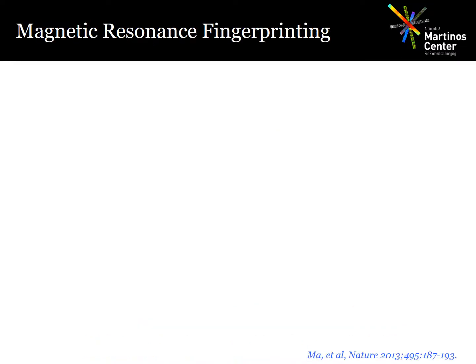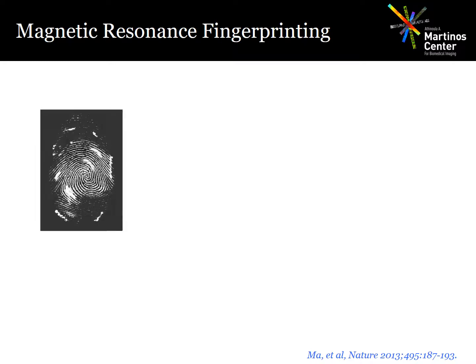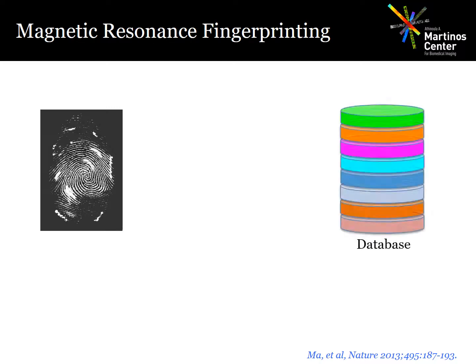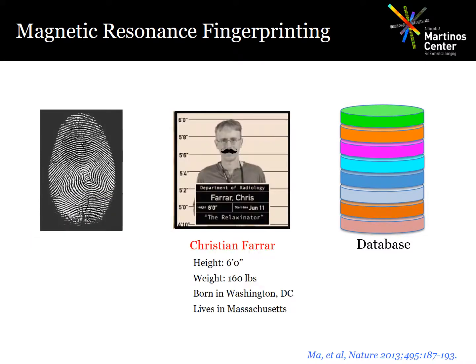MR fingerprinting is a recently developed technique that can theoretically provide the quantitative tissue maps that we want. Just to explain the concept, let's use an analogy. In a crime scene, a fingerprint can provide information on the subject if it matches an entry in a previously compiled database. For instance, in this case, the fingerprint belongs to my collaborator, Chris Farrar, and it immediately gives us a whole host of information about him.